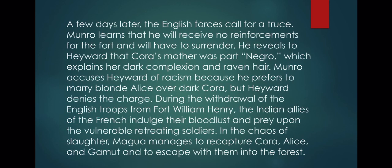Monroe reveals to Howard that Cora's mother was part Negro, which explains her dark complexion and dark hair. Monroe accuses Howard of racism because he prefers to marry blonde Alice over dark Cora, but Howard denies the charge. During the withdrawal of the English troops from Fort Henry, the Indian allies of the French unleash their bloodlust upon the vulnerable retreating soldiers. In the chaos of the slaughter, Magwa manages to recapture Cora, Alice, and Gamet and escape with them into the forest.